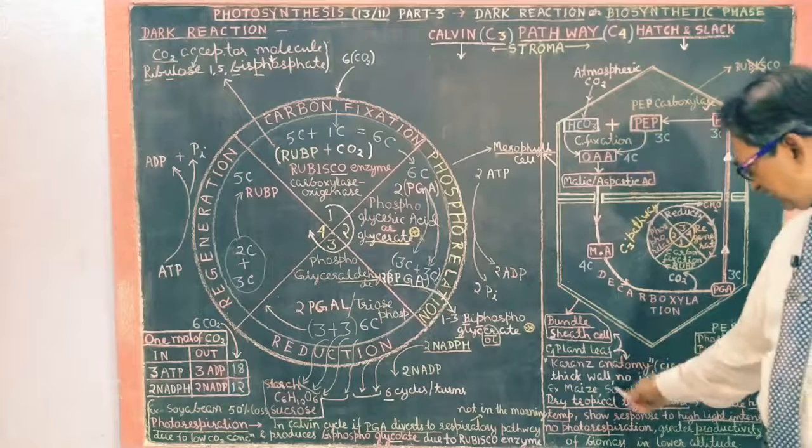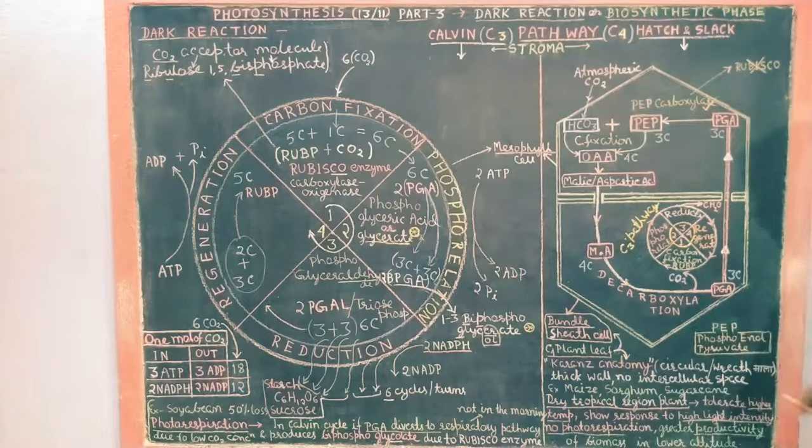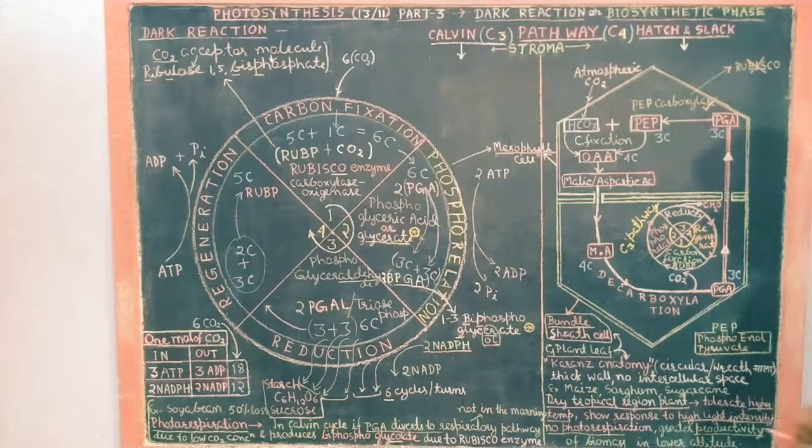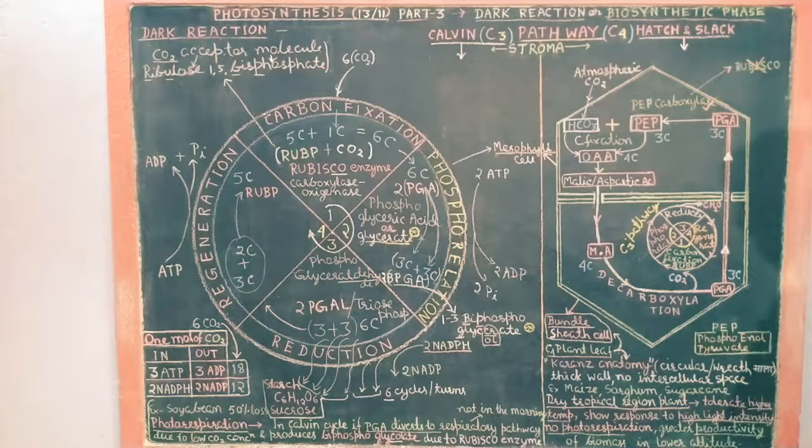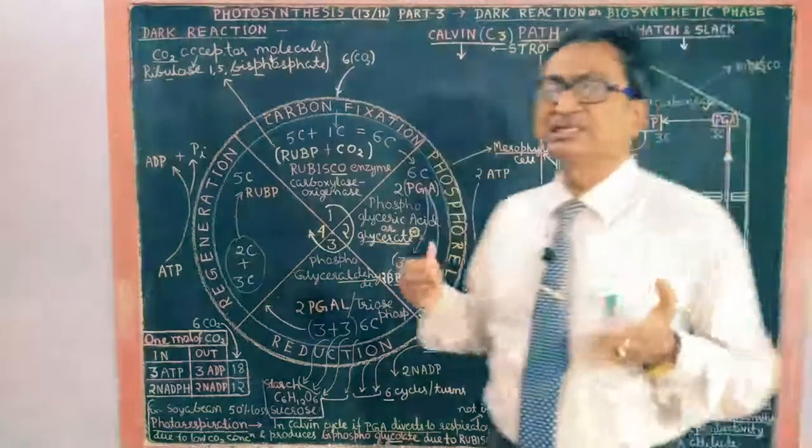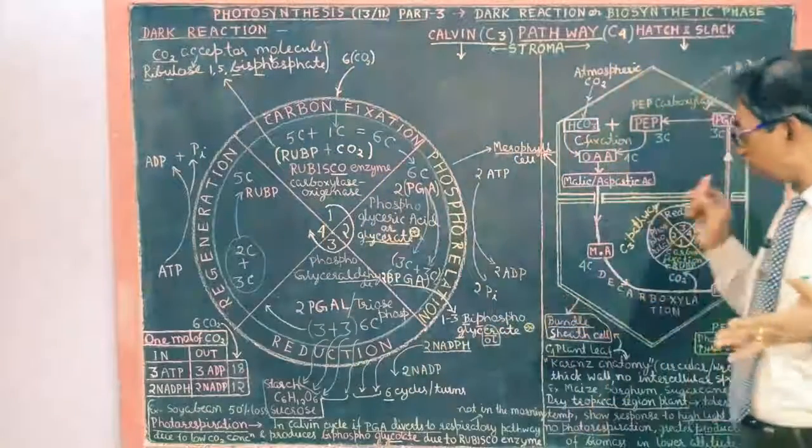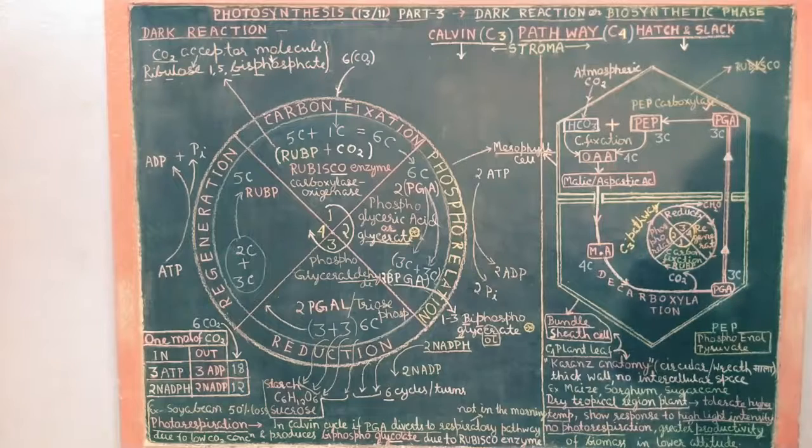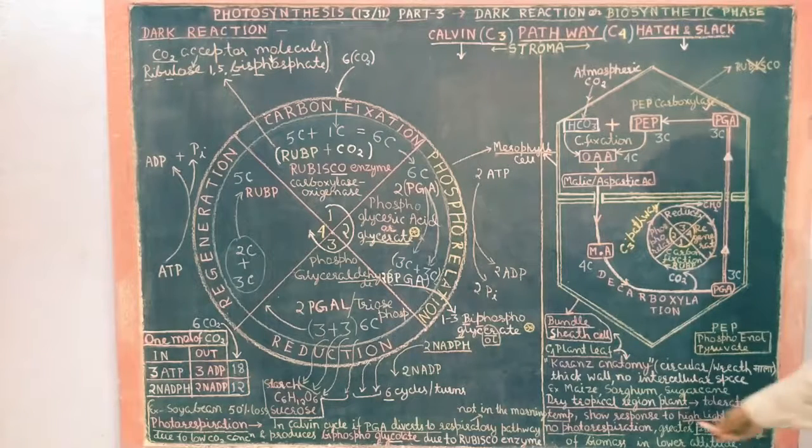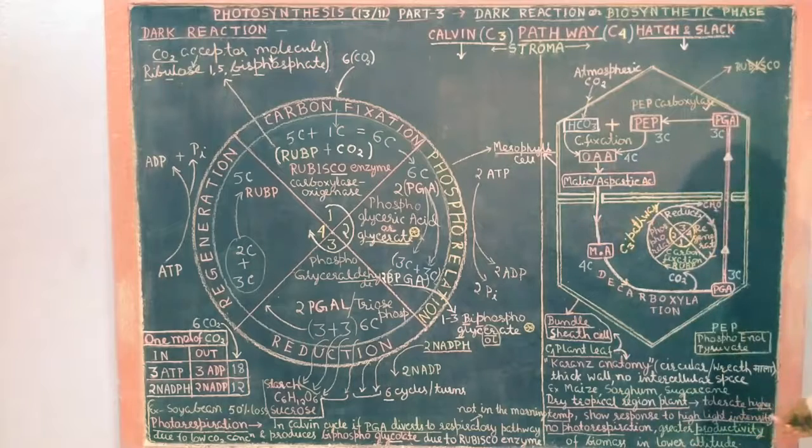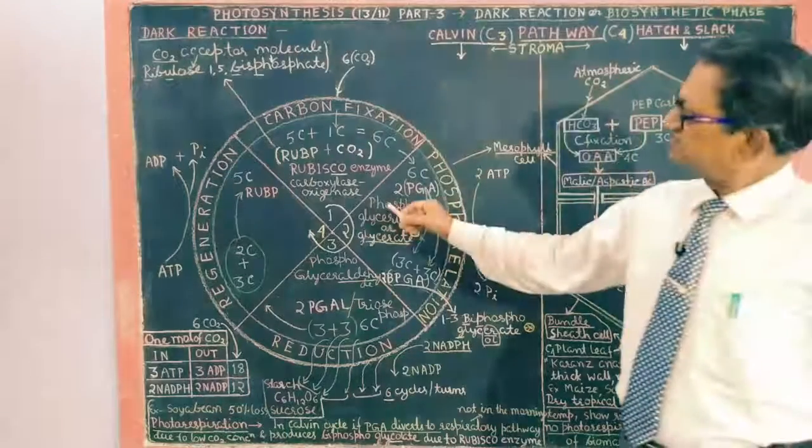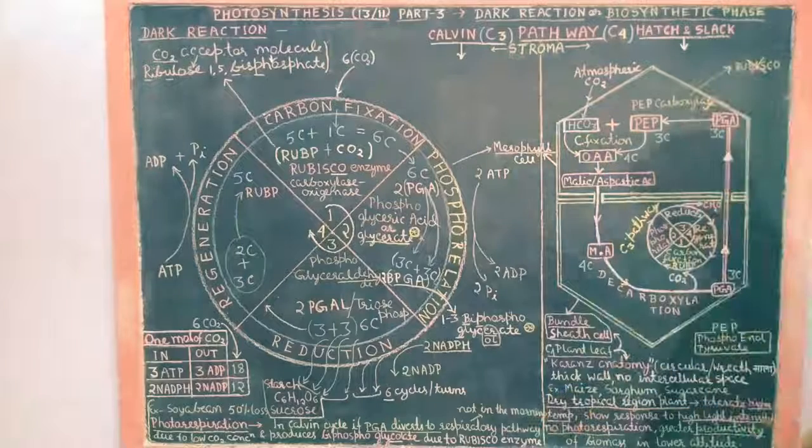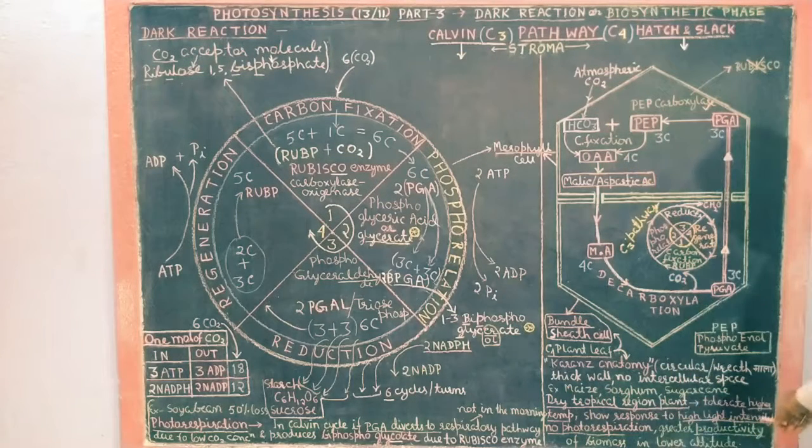Here is the leaf and the cells have thick walls and no intercellular space. This is dry tropical region plant. They tolerate higher temperature and high light intensity. So C4 plant and its biomass production is high, greater productivity and no photorespiration. In C3 plant there is photorespiration.